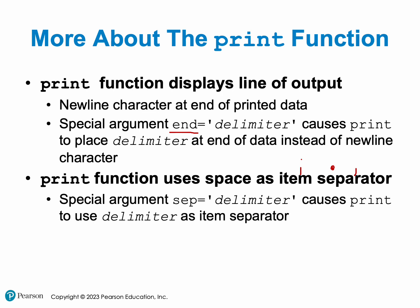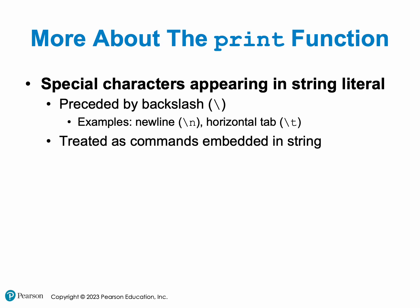Also, by default your print function will use a space as the item separator. If you are passing many arguments to your print function, a space is going to be your default item separator. However, you can use 'sep', which stands for separator, to change that — so instead of a space between your string arguments you can assign it to whatever character you want. Also, if you put a backslash in a string, there are some embedded commands: backslash-n produces a new line, and backslash-t produces a tab, which is about four to six spaces.